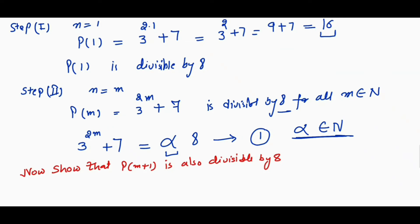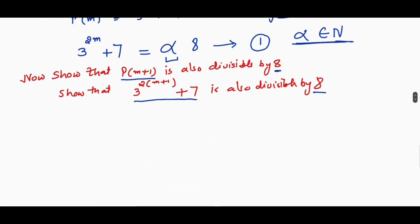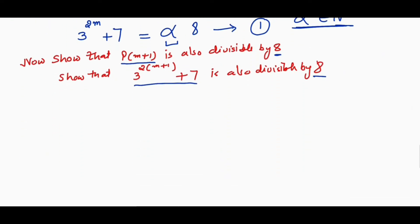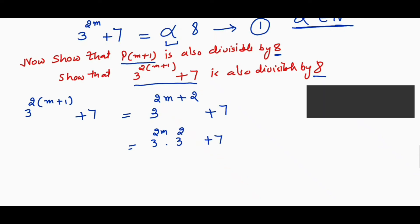Now we have to show that P(m+1) is also divisible by 8. For that, we have to show that 3 raised to the power 2 into (m+1) plus 7 is also divisible by 8. We can write this as 3 raised to the power 2(m+1) plus 7, which expands using the rule 3 raised to the power m·n equals 3^m raised to the power n.